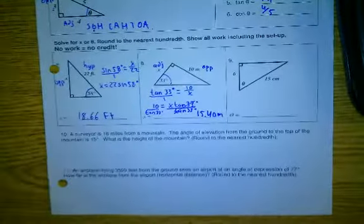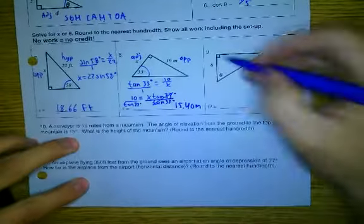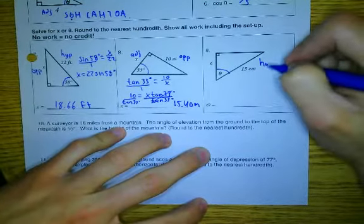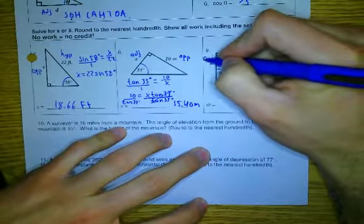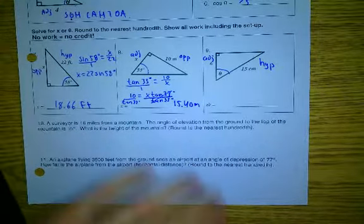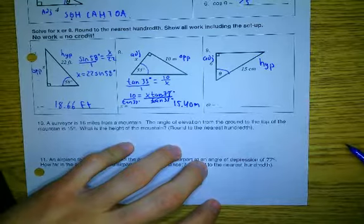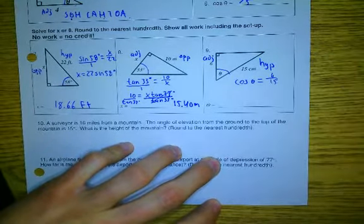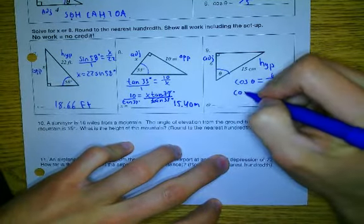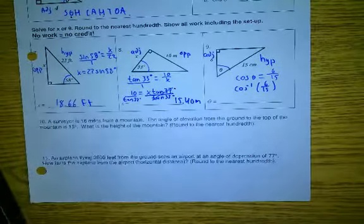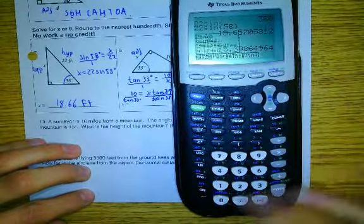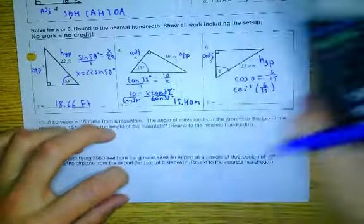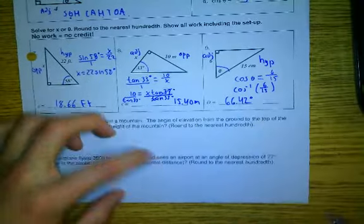Number nine. If this is your reference angle, label your sides. The 15 happens to be what side? The hypotenuse. Fantastic. And the 6? Your adjacent. Which ratio has to do with adjacent hypotenuse? Cosine. But in this case, you're looking for an angle, correct? So that means cosine of theta equals adjacent over hypotenuse. How do I find an angle? Inverse. So that means you have to do inverse cosine of 6 over 15. So then when you go to your calculator, you hit second cosine of 6 over 15, and your angle was approximately 66.42 degrees.